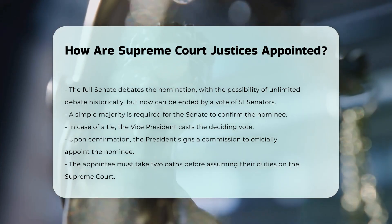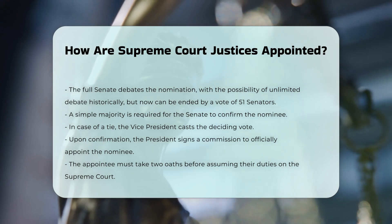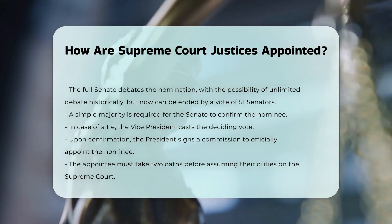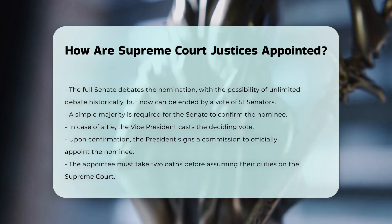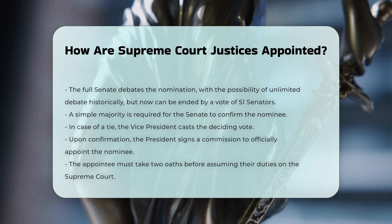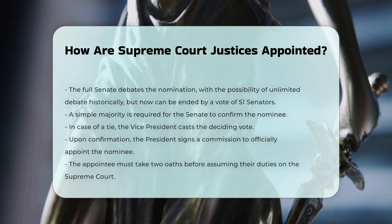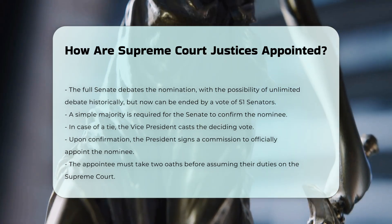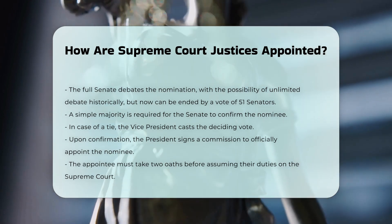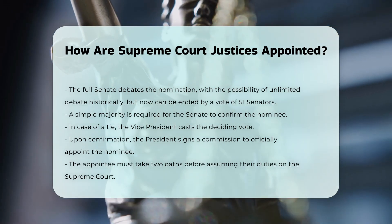After the Senate confirms the nominee, the President signs and delivers a commission, officially appointing the nominee to the court. The appointee must then take two oaths — the constitutional oath and the judicial oath — before assuming the duties of the office.